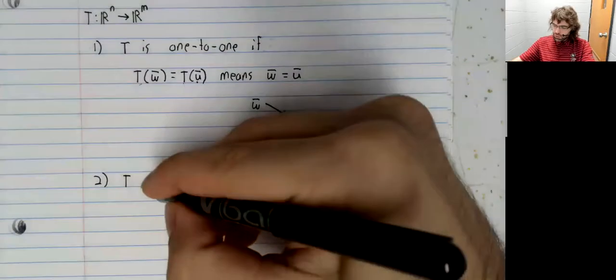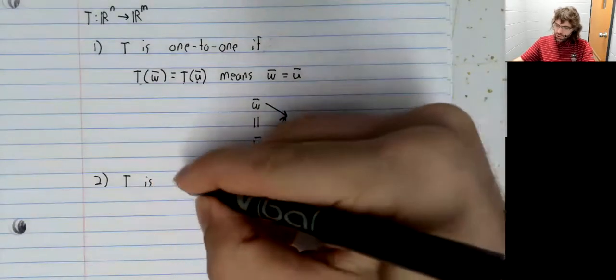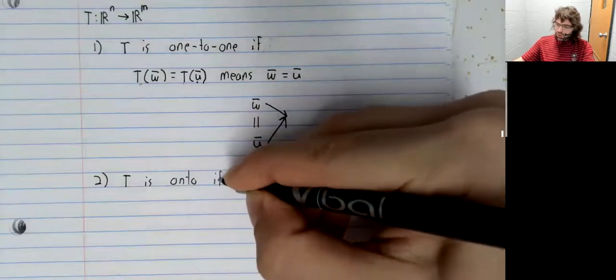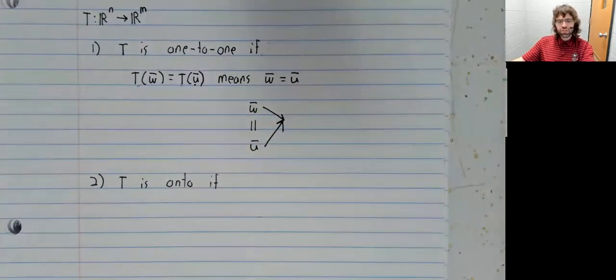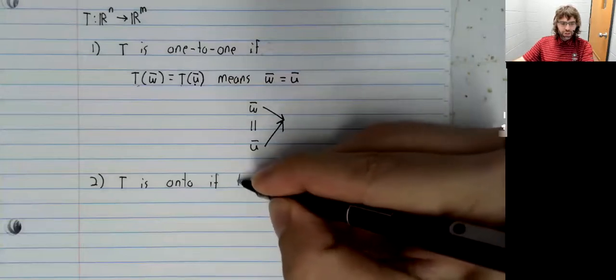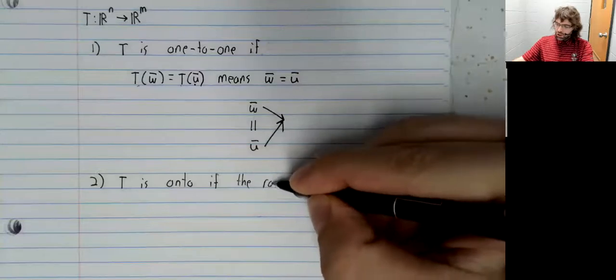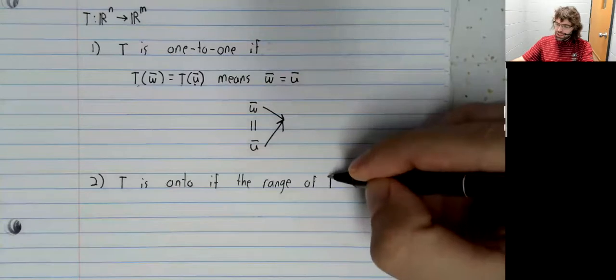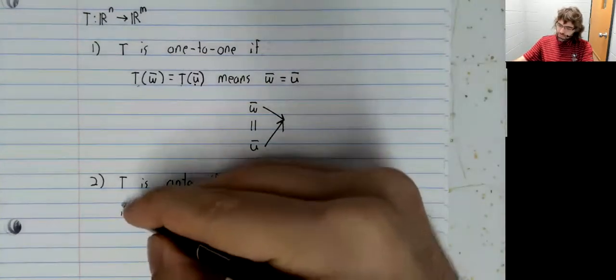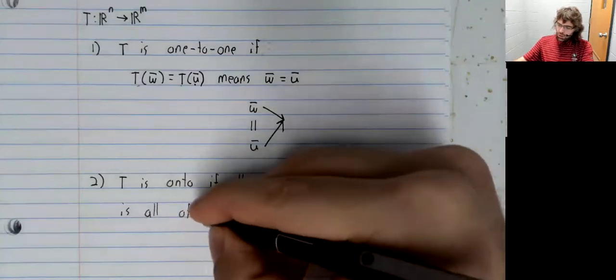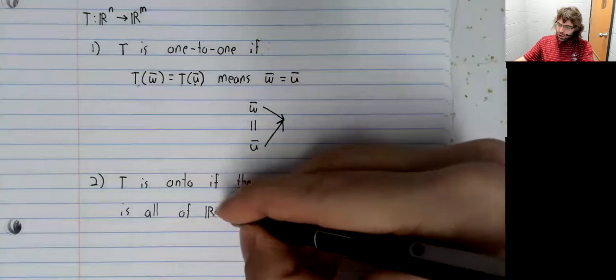Onto might be a new one. I'm not sure where students are first exposed to this idea, but T is onto if the range of T is all of R^M.